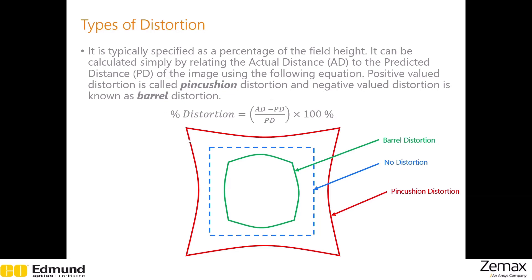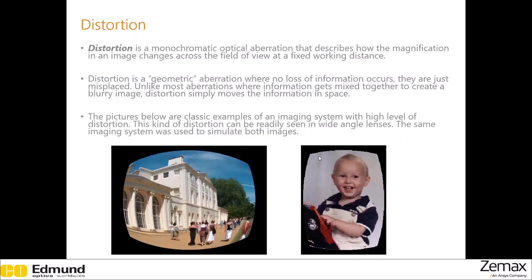If you think of the square in the middle — the blue square — as the reference where no distortion is present, this green shape represents barrel distortion, and this red one represents pin-cushion. Looking at the previous slide, you can easily see that both those images suffer from barrel distortion.